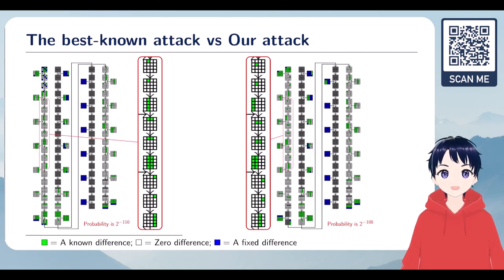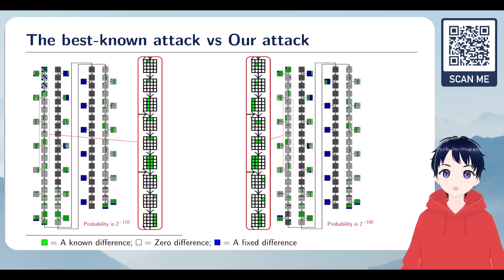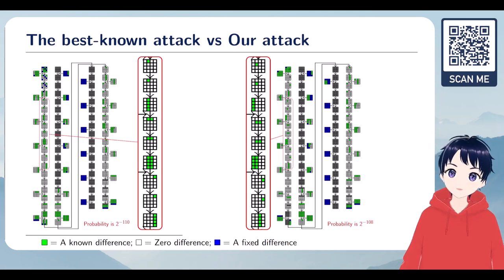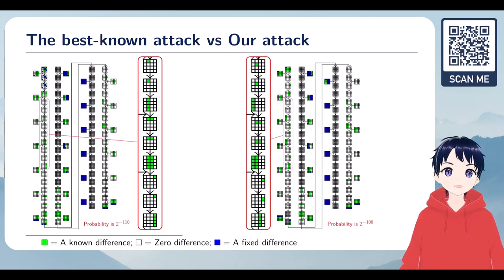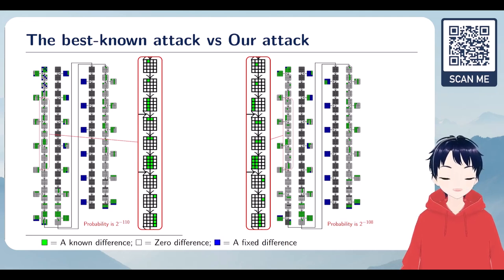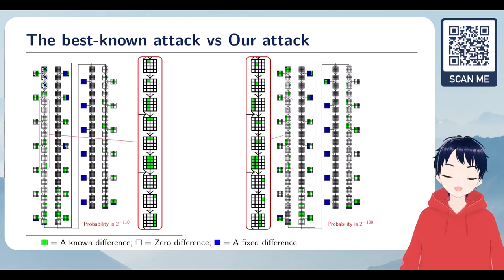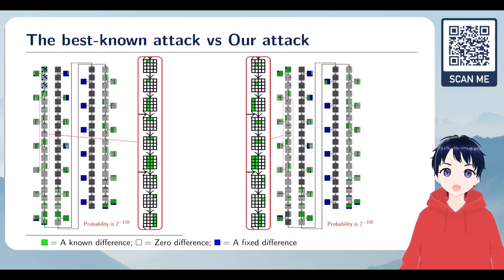For AES-192, we were able to find a better attack. It is like the original version — we use the same lower trail, but for the upper trail, the same but the position of the active byte is different. Our distinguisher has the probability of 2 to the power of minus 108, instead of 2 to the power of minus 110. It is a bit better, but almost has the same probability.